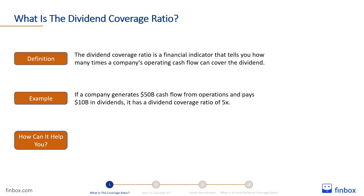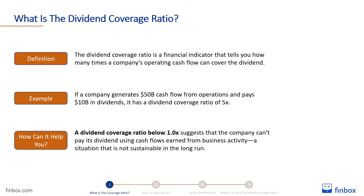Just like the dividend payout ratio, the dividend coverage ratio is a powerful instrument in the hands of income investors, as it can help avoid bad investment decisions. If you find a stock with a 15% dividend yield, you may be tempted to buy it in hopes of enjoying a substantial income stream. But what if the company has a 0.4 dividend coverage ratio? A ratio below 1 suggests that the company can't pay its dividend using cash flows earned from business activity — a situation that is not sustainable in the long run.